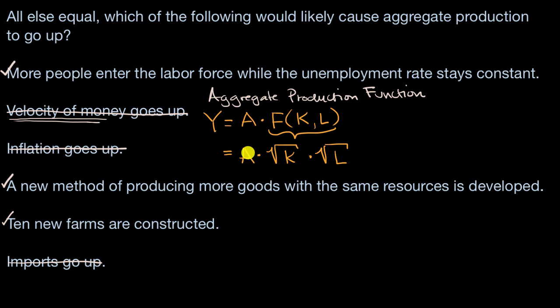Now last but not least, a related idea to an aggregate production function is this idea of productivity. Productivity. We already viewed A as total factor productivity, but it's really a measure of the technology and economy. Typically when people talk just about regular productivity, they're talking about output per capita, output per person.